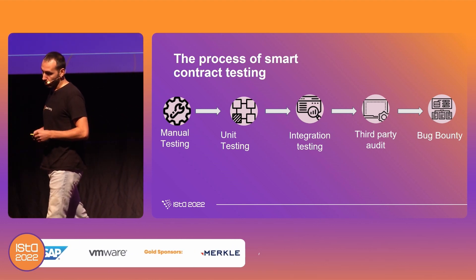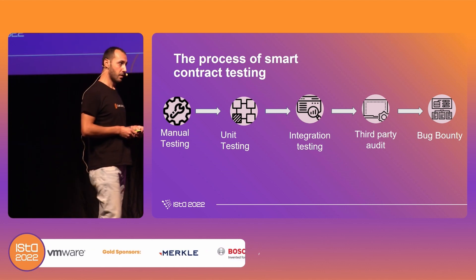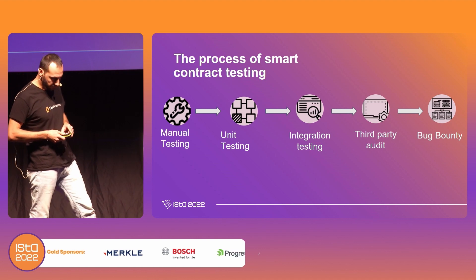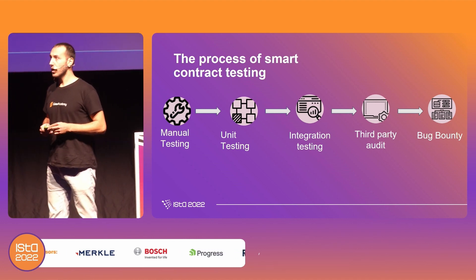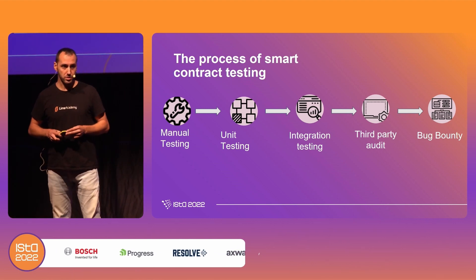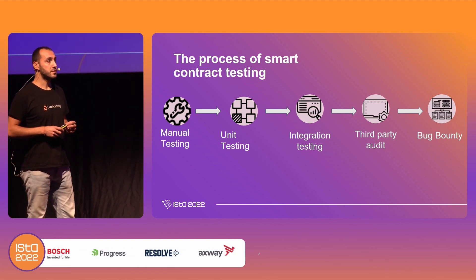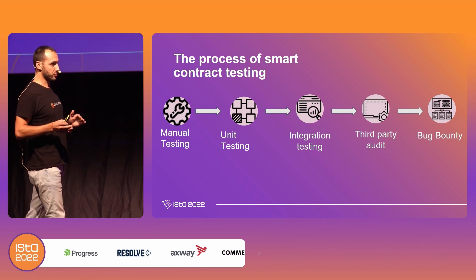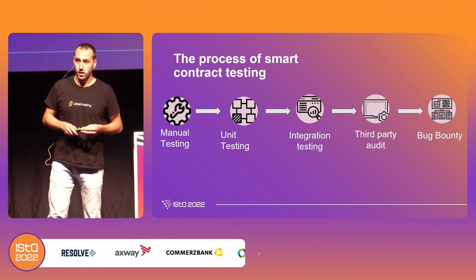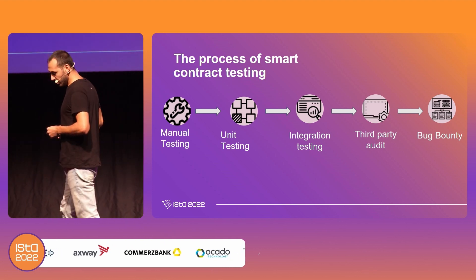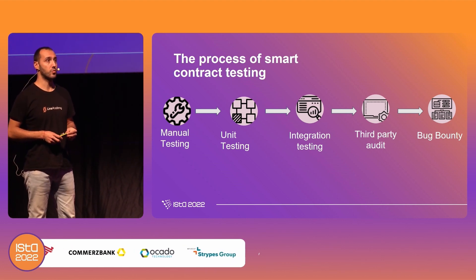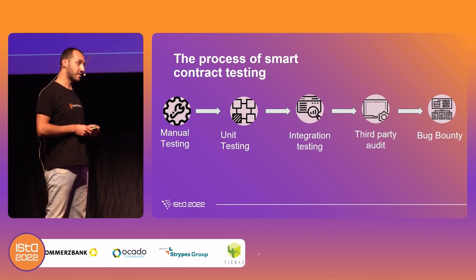Then, integration testing. Integration testing is one level higher than unit testing because you can test how different components of those contracts are working together. We can even have contracts that communicate with each other, and this is the place where you test that they can work together and that you're expecting their behavior.